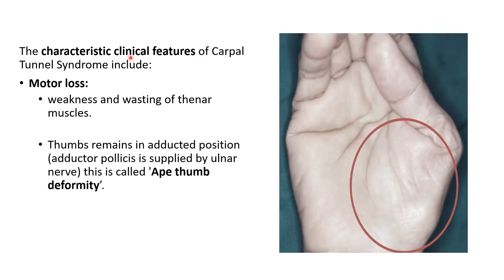The characteristic features of carpal tunnel syndrome: the median nerve supplies the muscles of the thenar eminence, so there will be weakness and wasting of the thenar eminence — it is flattened and the thumb will remain in an adducted position. This is because adductor pollicis, which is not supplied by median nerve but by ulnar nerve, acts unopposed, and this is known as ape-thumb deformity because apes cannot oppose their thumbs to other digits.